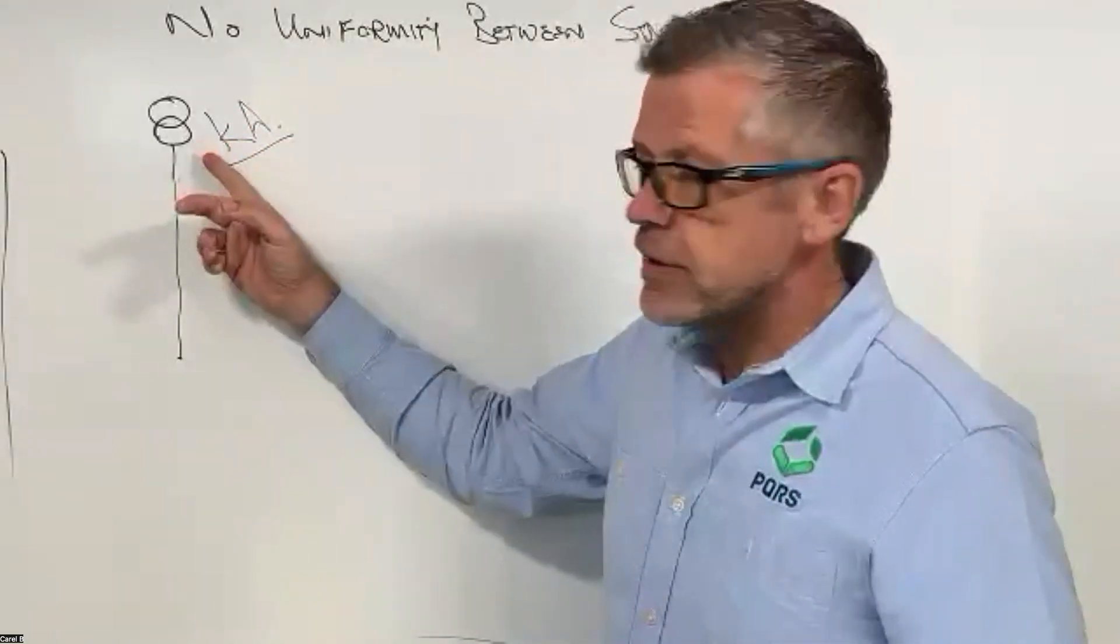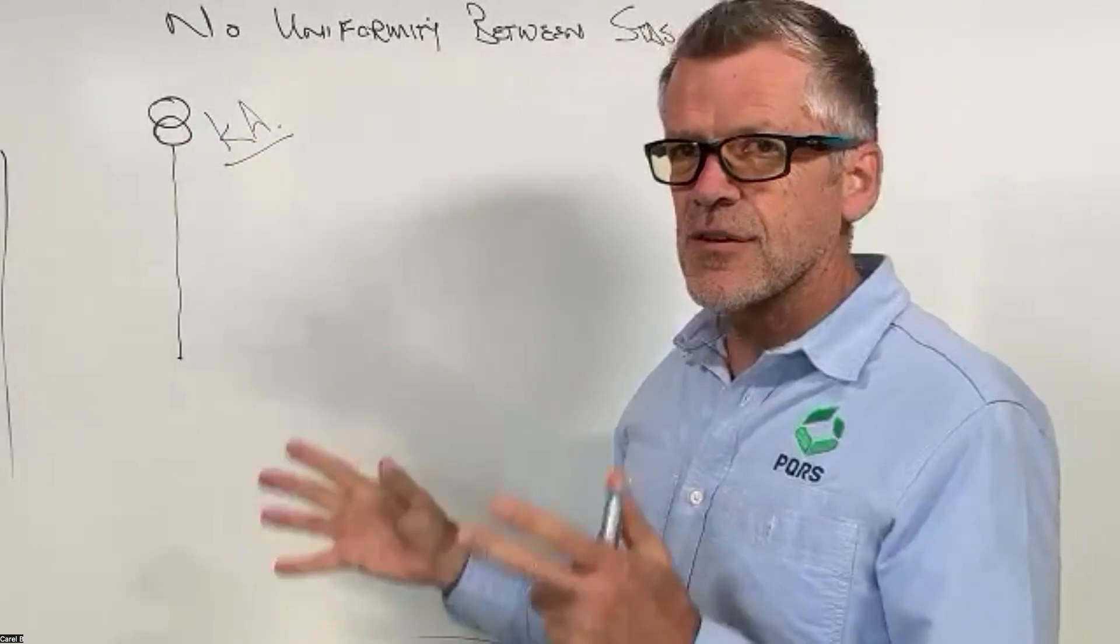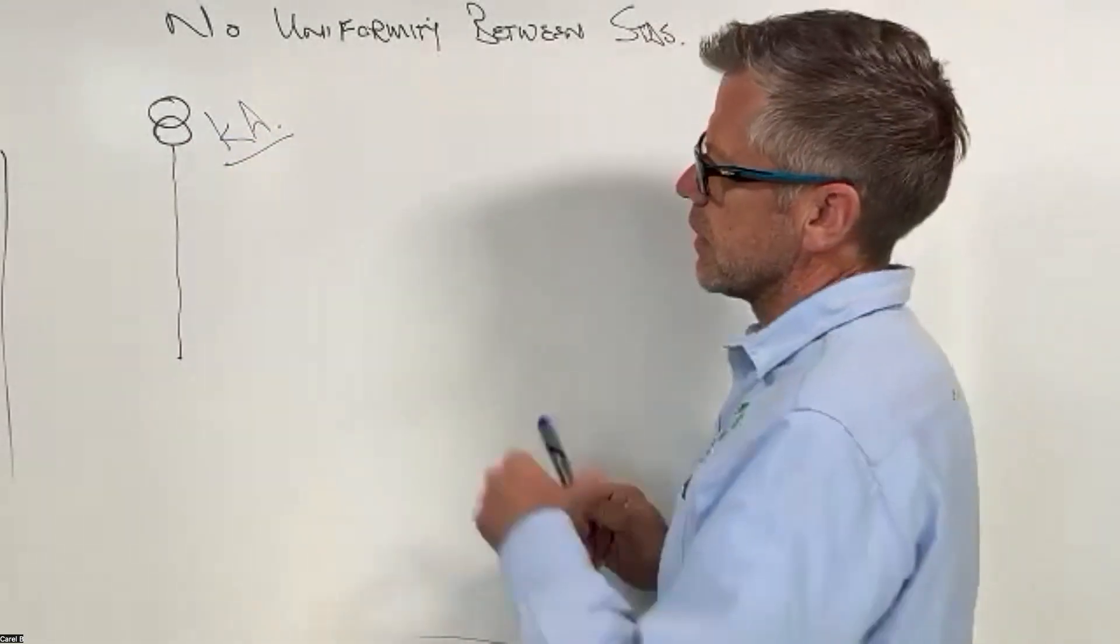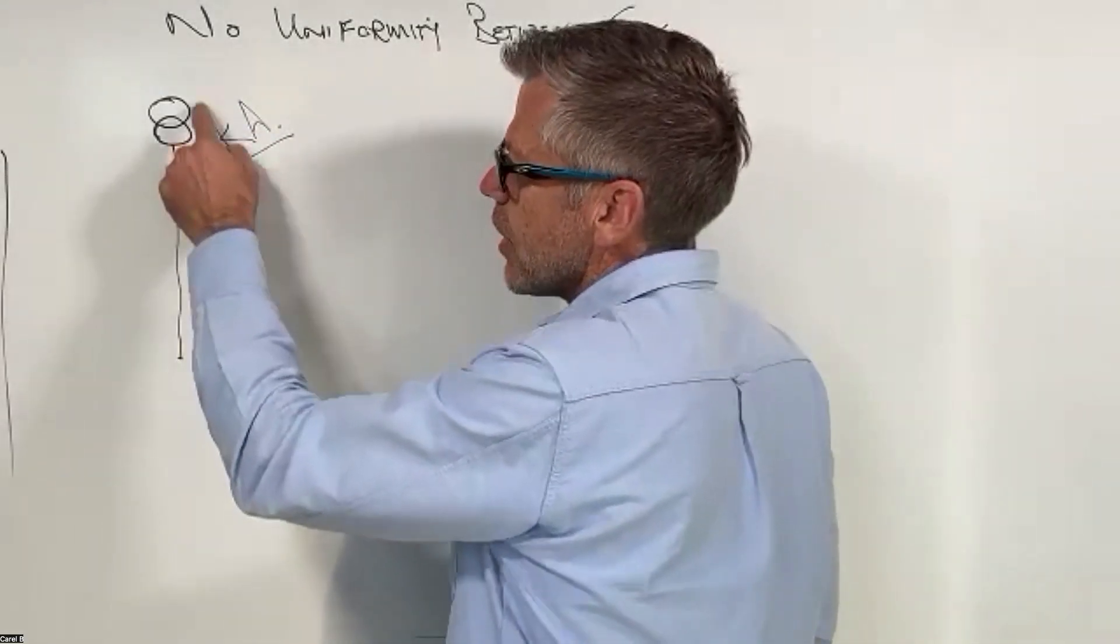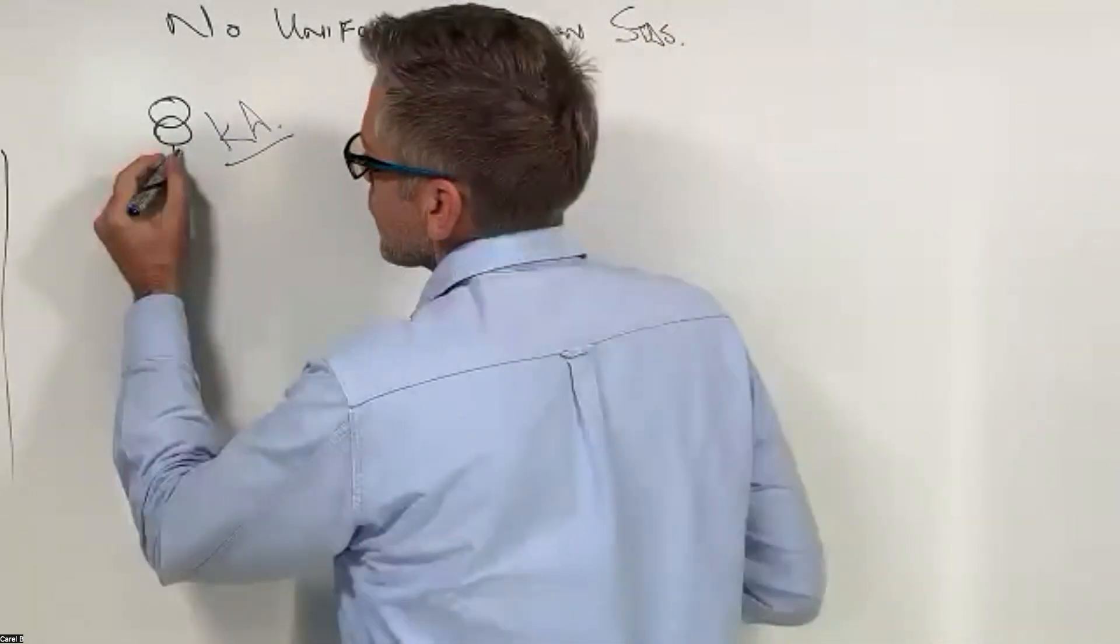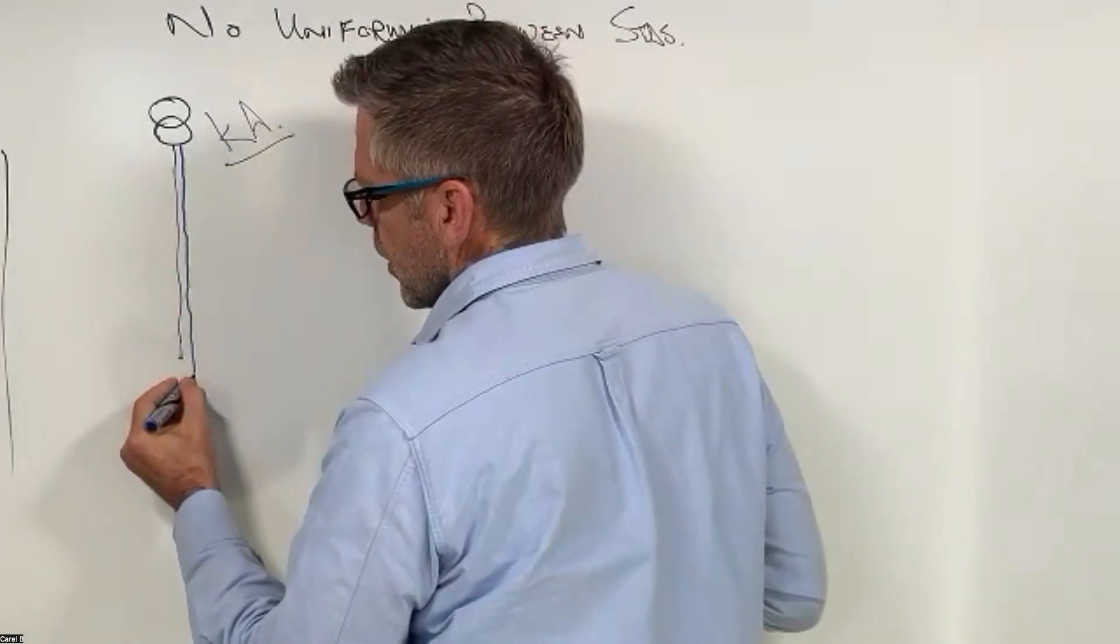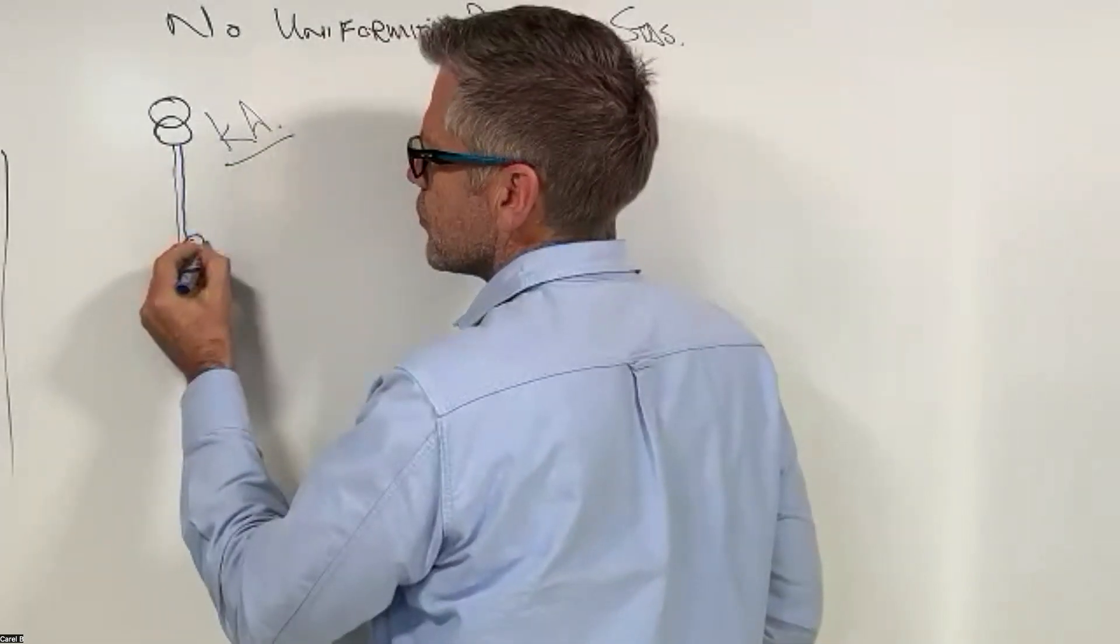That is going to be discharged from this transformer in the event of a fault. Now what these guys do is they know what the fault current value is, so they then try and determine what size cable they should use.